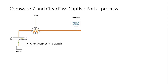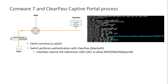What happens first is that the client connects to the switch and the switch performs a MAC authentication with ClearPass. The MAC authentication service on ClearPass is configured in such a way that access is granted automatically, however with limited access. Upon the first MAC authentication, the user is authenticated and ClearPass returns specific values for web redirection and an ACL, as you can see here.